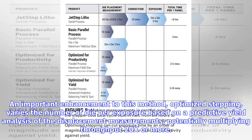An important enhancement to this method, optimized stepping, varies the number of die per exposure based on a predictive yield analysis of the displacement measurements, potentially multiplying throughput 20x or more.